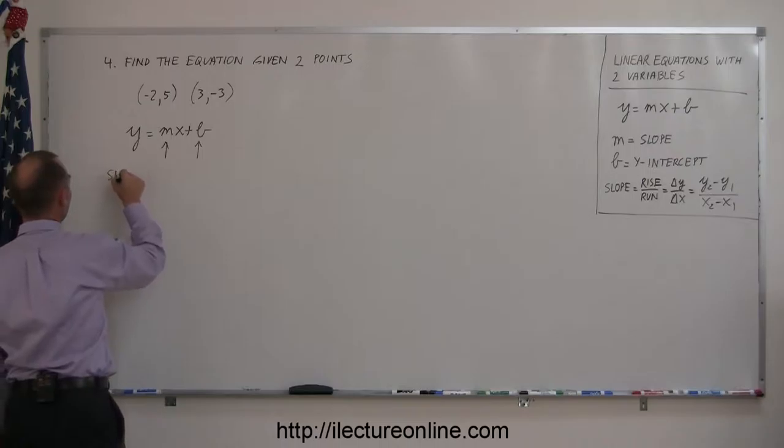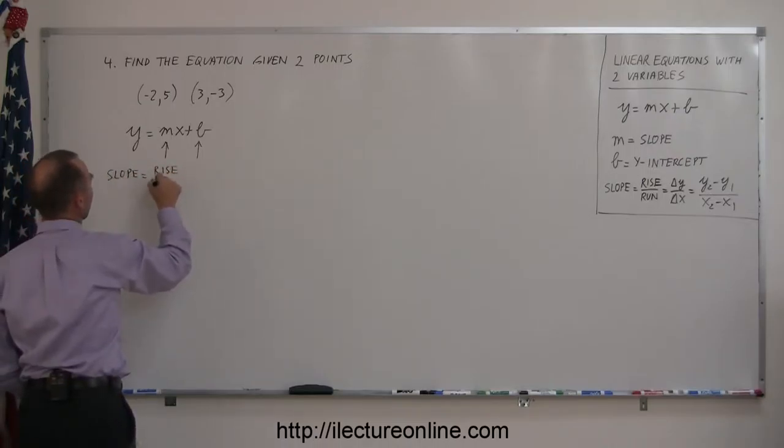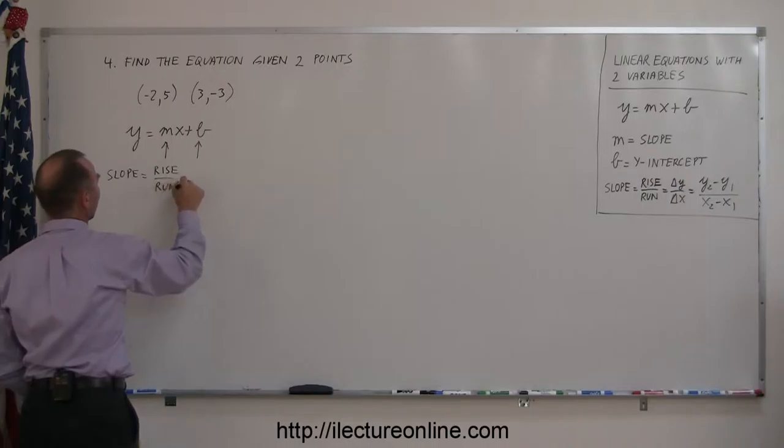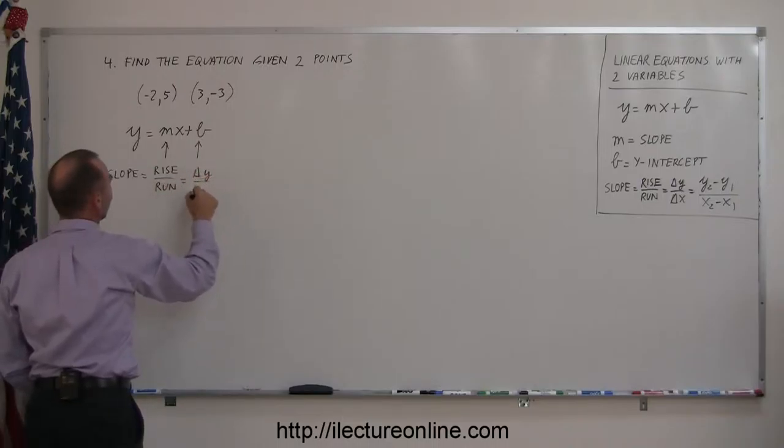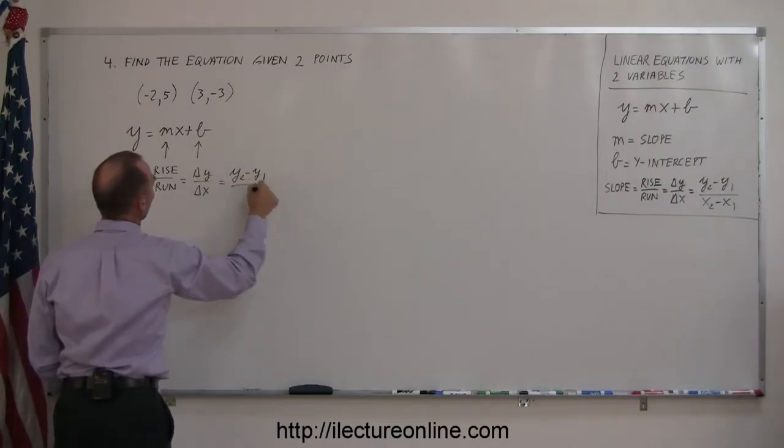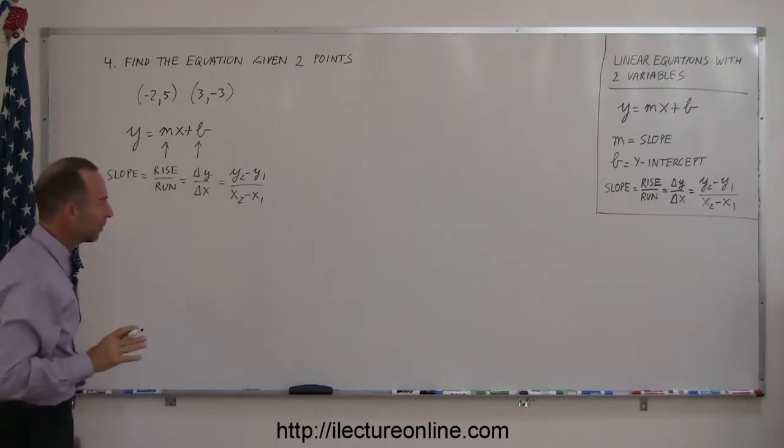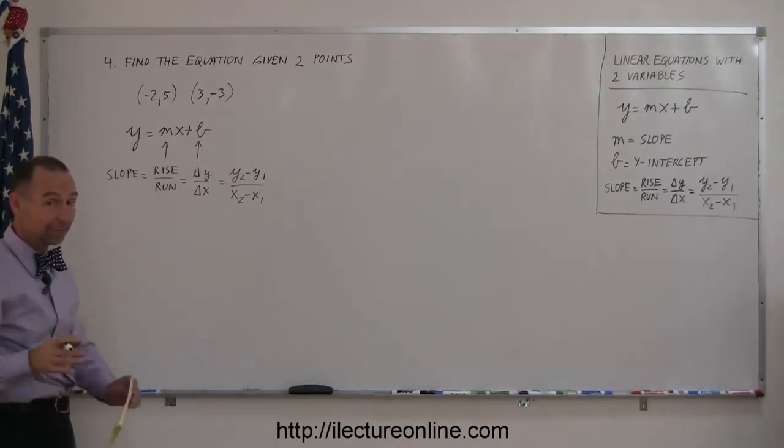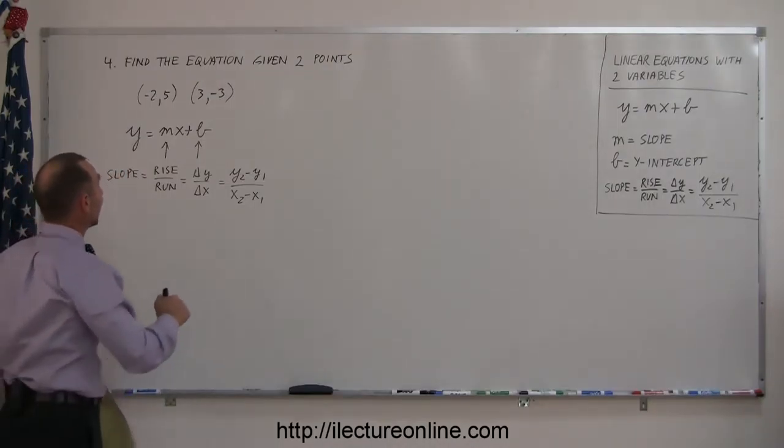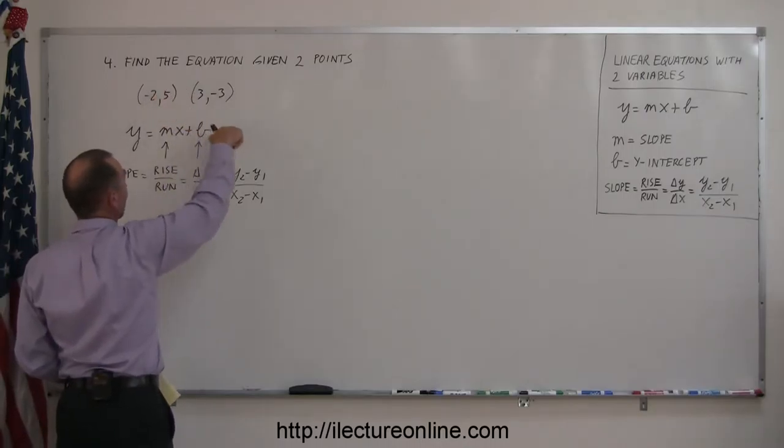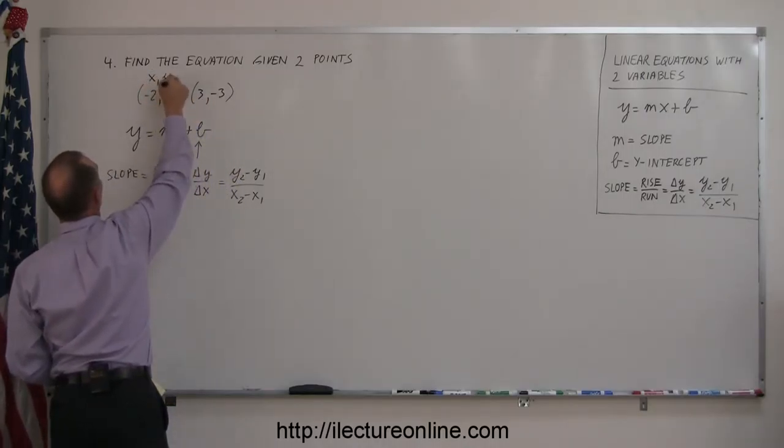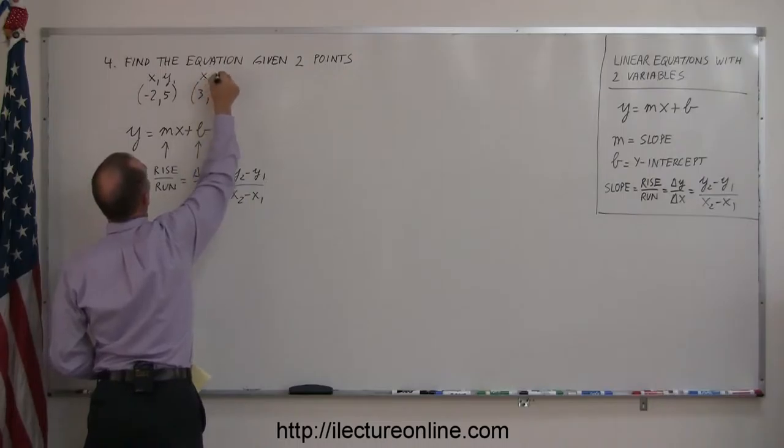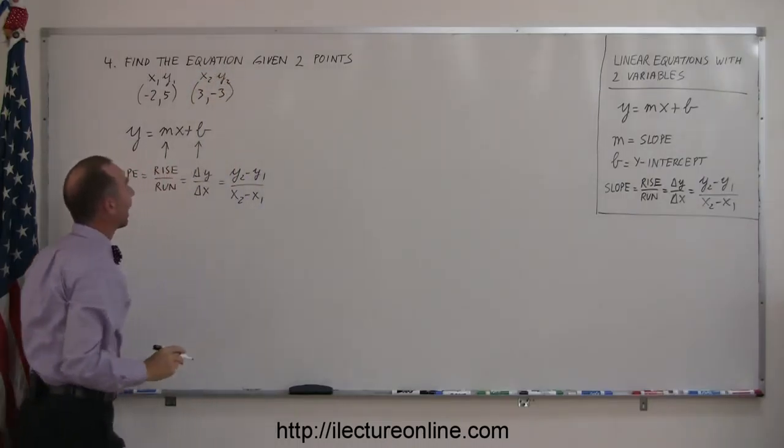The definition says that the slope is equal to the rise over the run, which is the change in the y values over the change in the x values of the two points, which is y2 minus y1 over x2 minus x1. And just to make sure we don't make any mistakes here, because it's very common that students make mistakes in this area, we label the points: this is x1, y1, this is x2, y2.